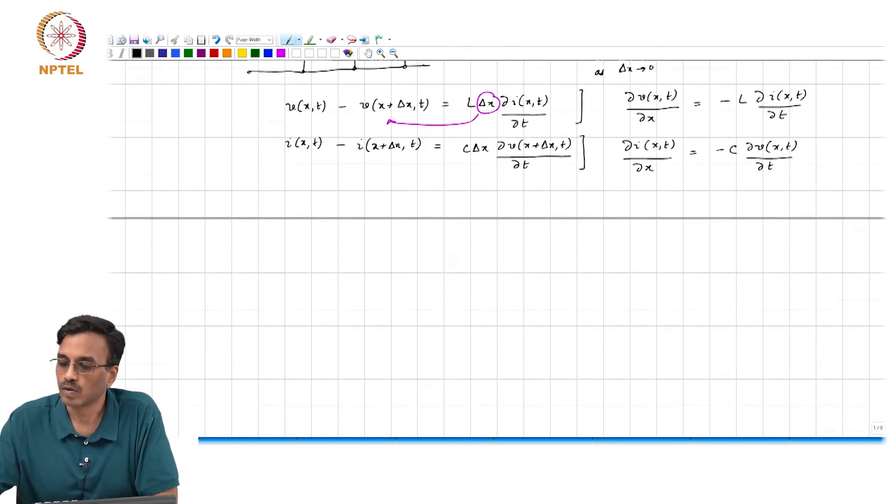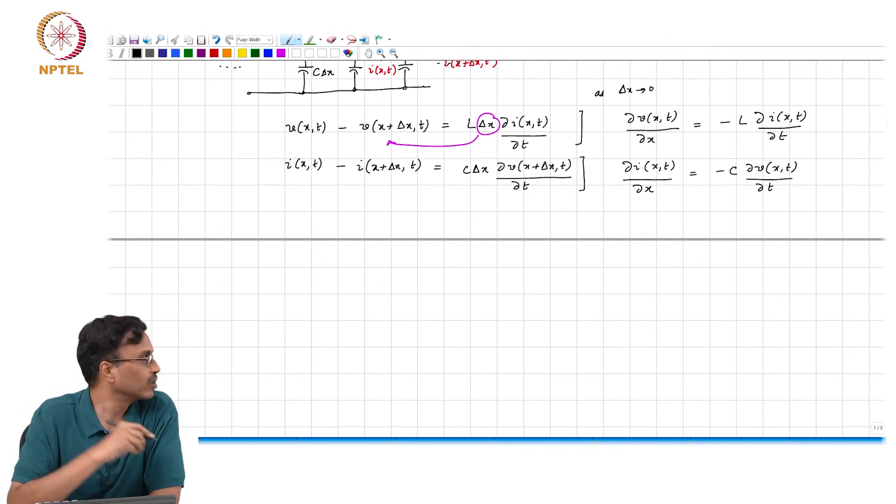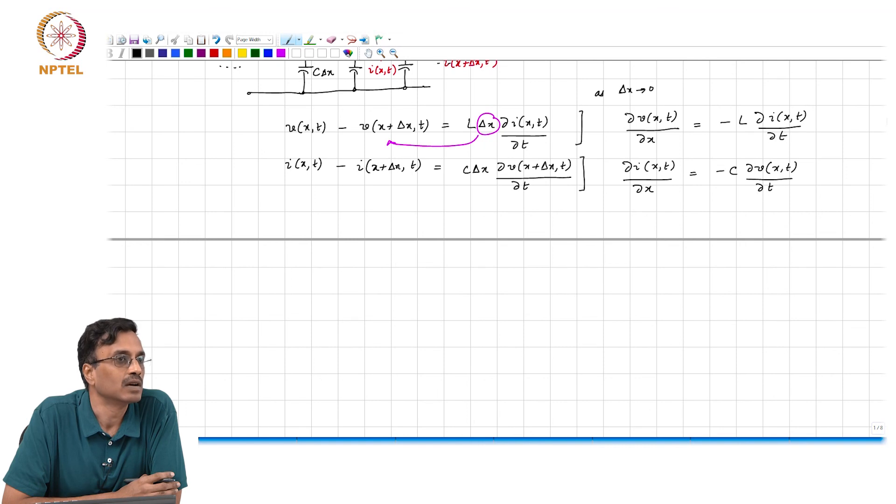Does it make sense? So these are two first-order linear coupled partial differential equations. And whenever you have two equations and two variables, you know what to do to find the solution? Well, you eliminate one of them.